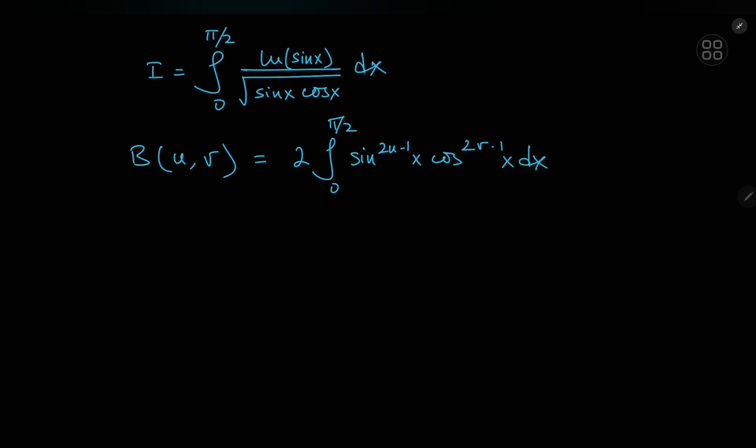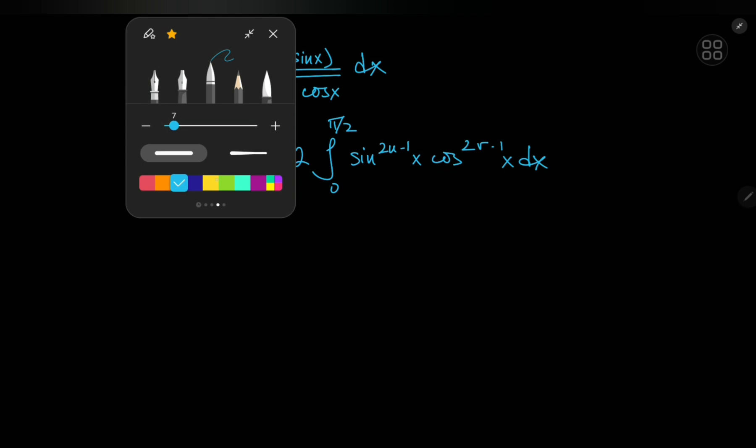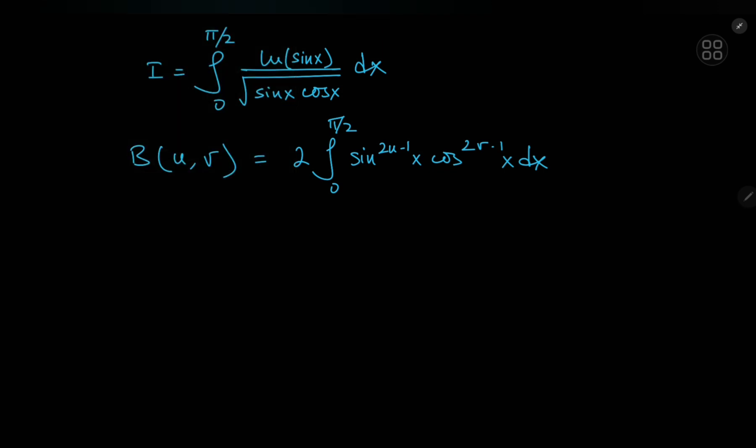Now how exactly does the beta function help in getting us to the target integral? Well for that all we have to do is differentiate partially with respect to the u variable. So in this case, of course we can switch up the order of the integration and the differentiation operators because we know that the integral for the beta function will converge for all values of u and v in its domain.